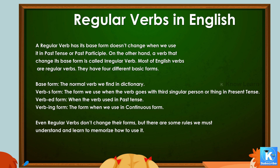Most English verbs are regular verbs. They have four different basic forms: base form, the normal verb we find in a dictionary; verb-s form, the form we use when the verb goes with a third person singular in present tense; verb-ed form, when the verb is used in past tense; and the verbing form, used in continuous form. Even though regular verbs don't change their base forms, there are some rules we must understand and learn.